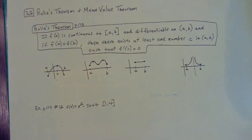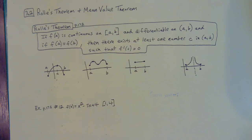I also have this handout link for you so you could print that out. We are going to do two examples together — two theorems in this section that are going to be on our AP test. We already covered the Intermediate Value Theorem, and now we need to talk about Rolle's Theorem and the Mean Value Theorem for derivatives.